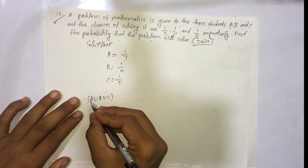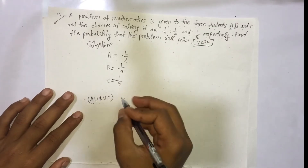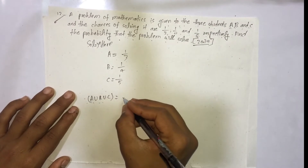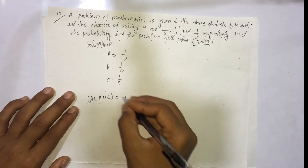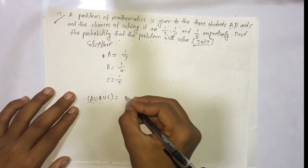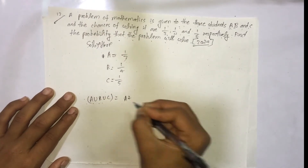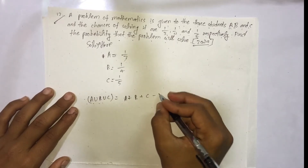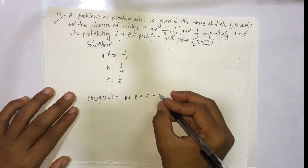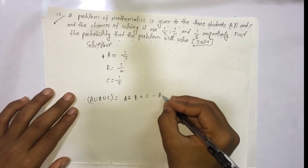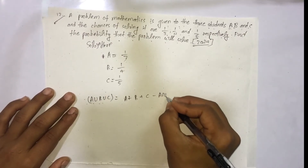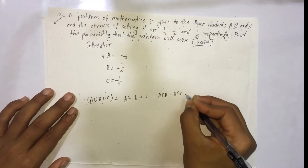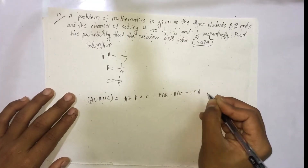So, this is P(A union B union C), which expands as P(A) + P(B) + P(C) minus P(A intersection B) minus P(B intersection C) minus P(C intersection A).